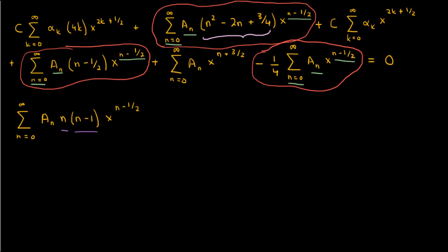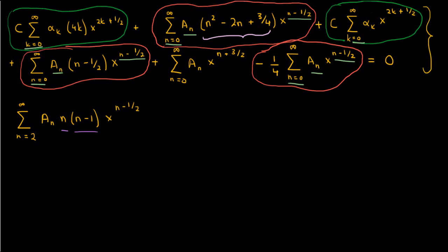The n equals 0 and n equals 1 terms in this summation are both 0 since A_n multiplies n times n minus 1, so we can start the summation at n equals 2. Looking at the terms involving c, they start at the same k, have the same power on x, and both contain alpha sub k, so we combine them to get c times the sum from k equals 0 to infinity of alpha sub k times 4k plus 1 times x to the power 2k plus 1/2.